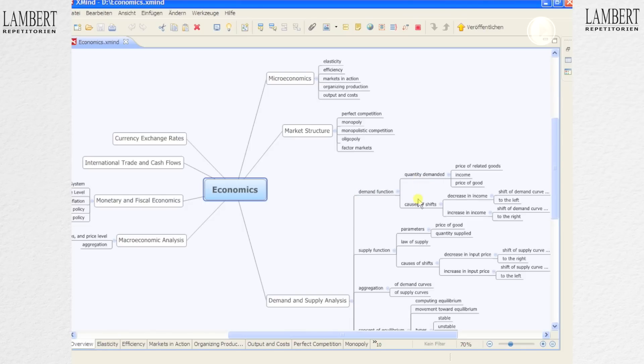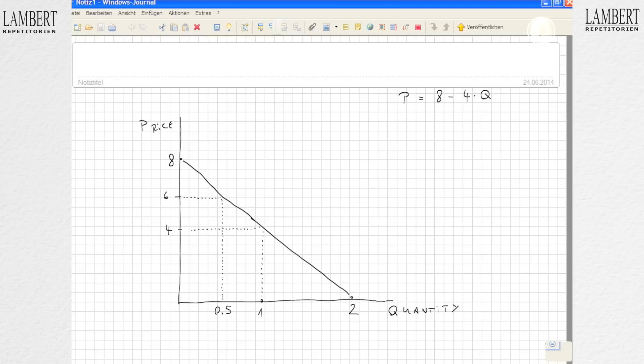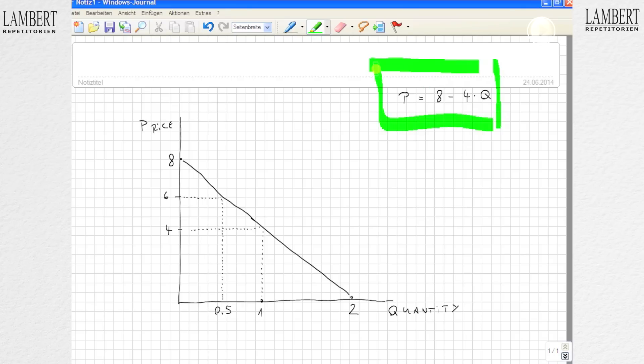We'll cover quantity demanded and the causes of shifts. Let's take a look at this example of a demand function. As we can see here, the price equals 8 minus 4 times the quantity, so if the price is...